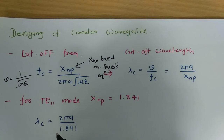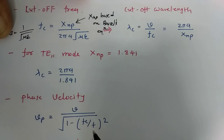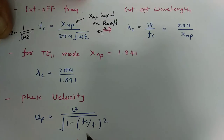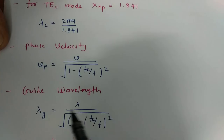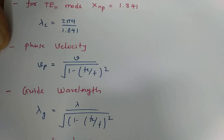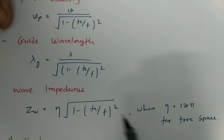For TE11 mode the cutoff wavelength is 2πA / 1.841. Phase velocity is velocity / √(1 − (Fc/F)²), where F is the operating frequency and Fc is the cutoff frequency. Guided wavelength λG = λ / √(1 − (Fc/F)²). Wave impedance Z = η × √(1 − (Fc/F)²), where η is 120π for free space.